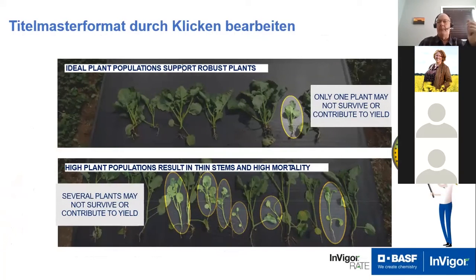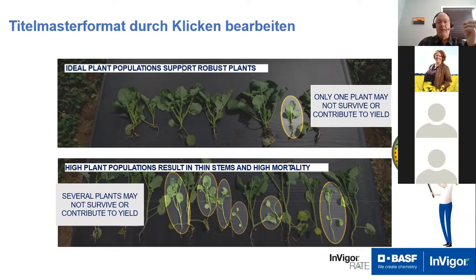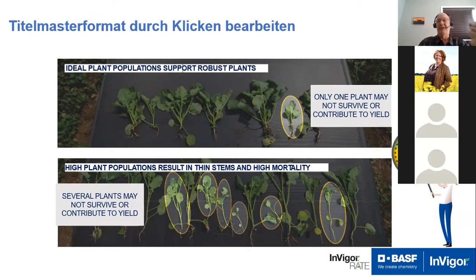Having too heavy a population can actually lead to thin stems and high mortality in the population. There isn't much point putting seeds in the ground that you fully expect are going to die because of mortality. In the picture, you see very small spindly stems that are slight plants with very thin stems — not robust — and importantly, they're below the canopy of the lower plants. These plants aren't going to make it. A more ideal plant population shows that out of a group of plants taken from one foot of row, basically one plant is below the canopy and may not survive — versus many in a high-density scenario.